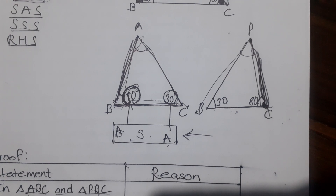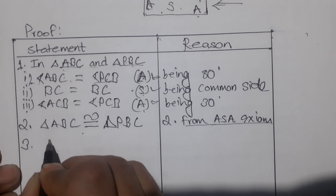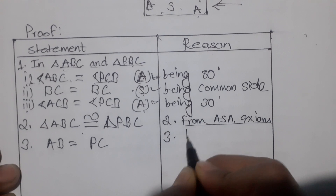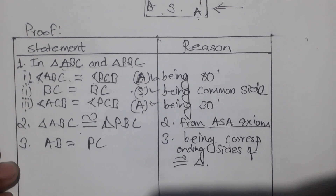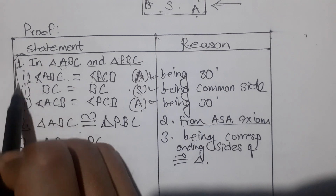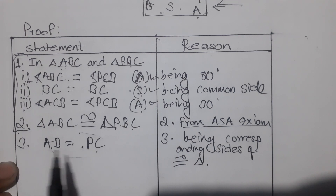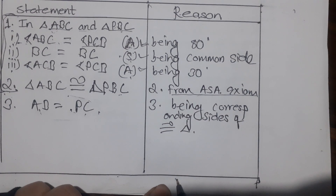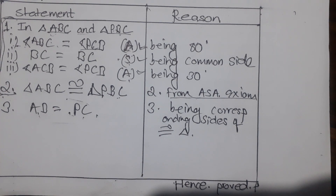This is the same in size and same in shape — exactly the same in shape. This confirms the congruence of triangle ABC and triangle PBC. See you in the next video.